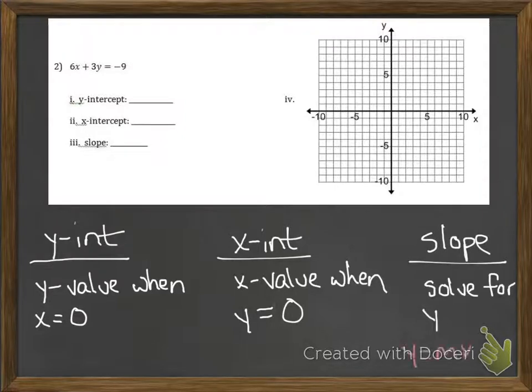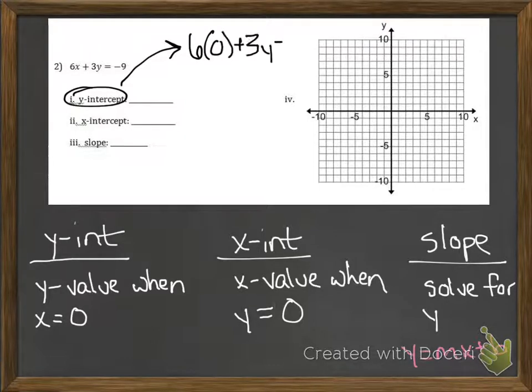And when identifying slope, we can just solve for y and then use our slope-intercept form in order to identify which number the slope is supposed to be. So let's find our y-intercept first by plugging in 0 for x. That gives us 3y equals negative 9, and if we divide both sides by 3, then that gives us a value of negative 3, so that's our y-intercept.